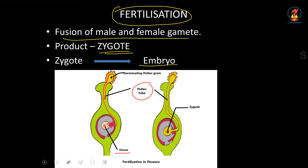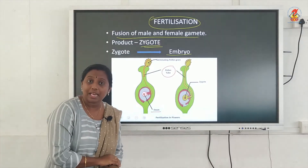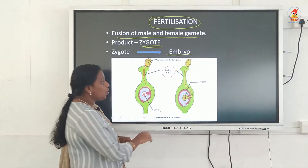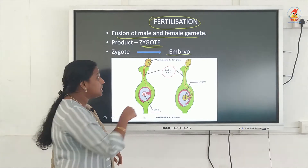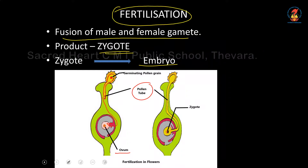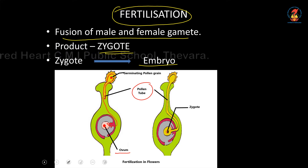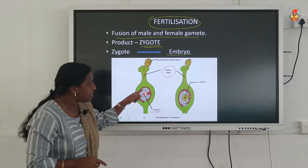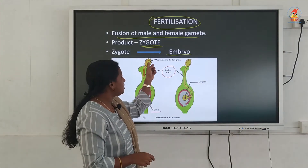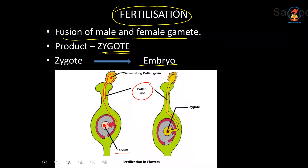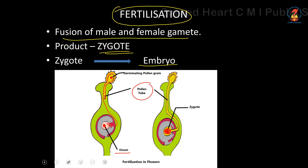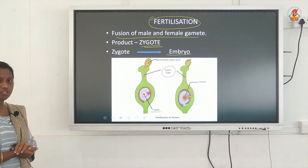The pollen tube is growing down and it reaches the ovum. Ovum is the female gamete — another name for the female gamete is ovum. It will reach the female gamete and fuse with it. Inside the pollen grain you can see a dot — this is the male gamete. Inside the female ovary, inside the ovule, you will find the ovum or female gamete. When the pollen tube develops, the male gamete comes through the pollen tube and fuses with the female gamete to form a zygote — the fusion product of fertilization.